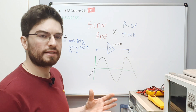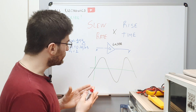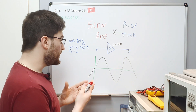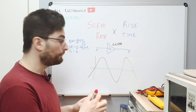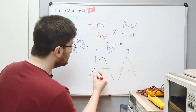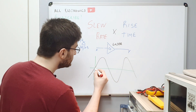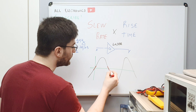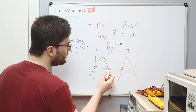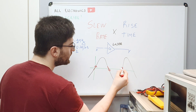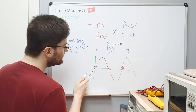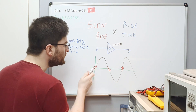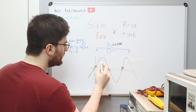We need to understand that for a sinusoidal signal, the point at which it changes fastest is at the zero-crossings. These points are where the signal tries to transition fastest.